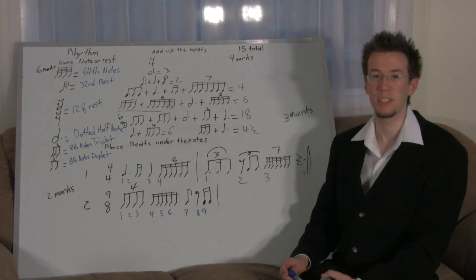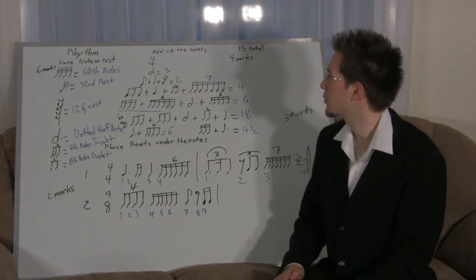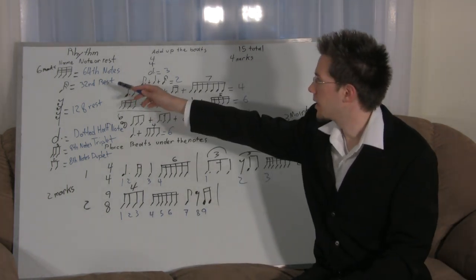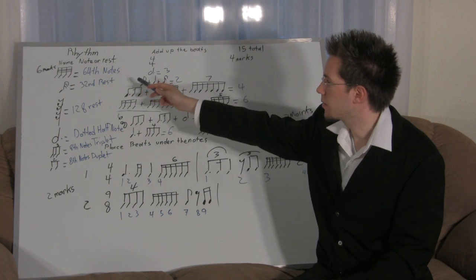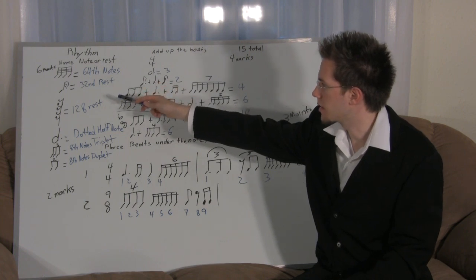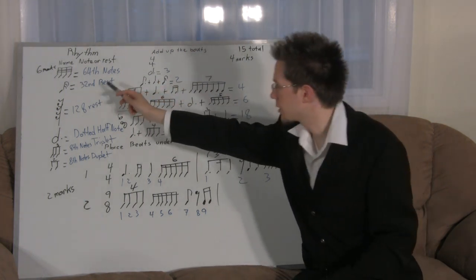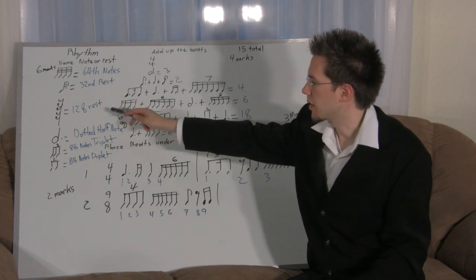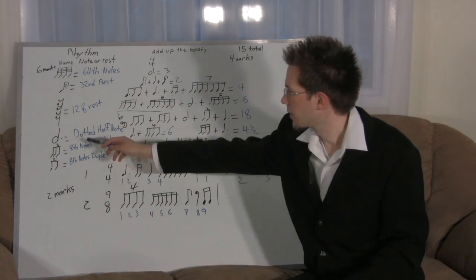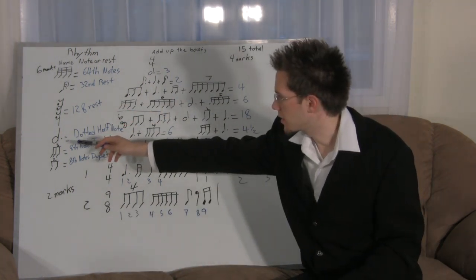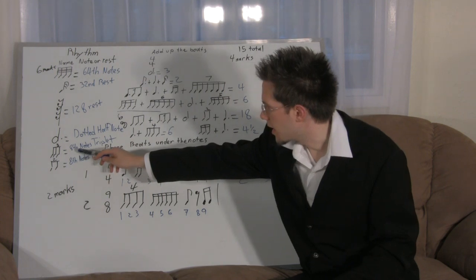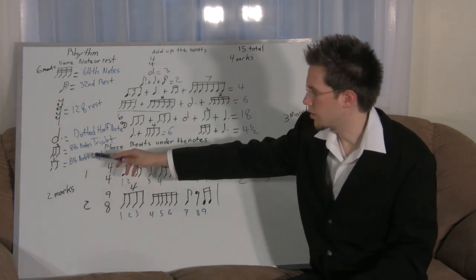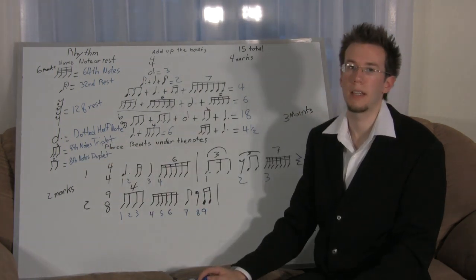Here are the marks for the rhythm section. The top one is a group of 64th notes, the second is a 32nd note, the one with five dots is a 128th rest, then there's a dotted half note, an eighth note triplet, and an eighth note duplet — the three makes it a triplet and the two makes it a duplet, and you also name what type of note it is.